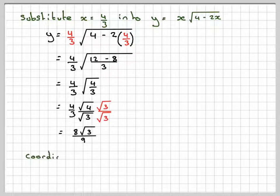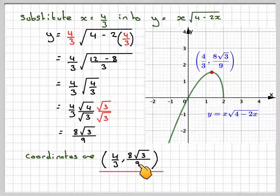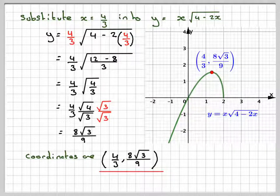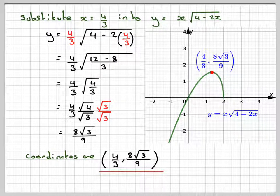If we compare, write down the coordinates, so it's going to be 4 over 3, 8 root 3 over 9. We have to write down the exact values and compare it with the graph that we drew at the beginning. We can see we've got the answer correct.